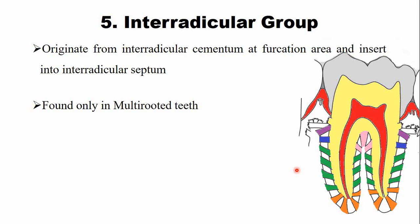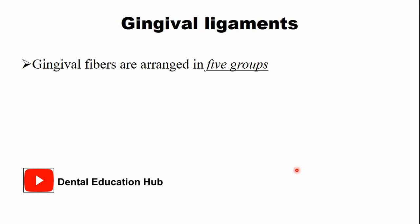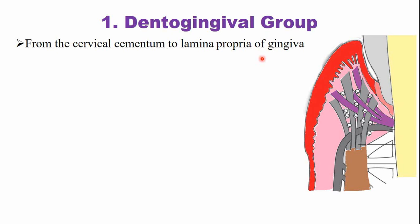Now we will discuss the gingival group of fibers. Similar to the principal fibers, the gingival group is also arranged into five groups. The first is the dentogingival group, which originates from the cervical cementum and inserts into the lamina propria of the gingiva. The dentogingival fibers are the most numerous among the gingival fibers, similar to how the oblique fibers are most numerous in the principal group.